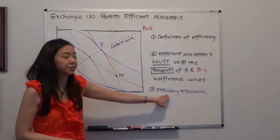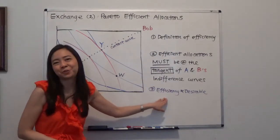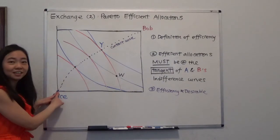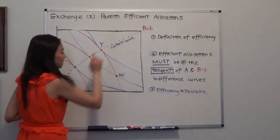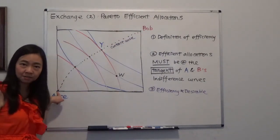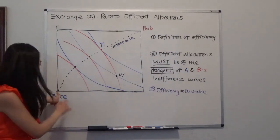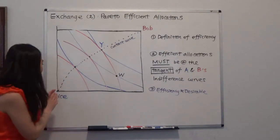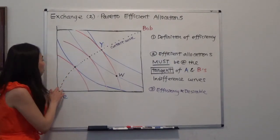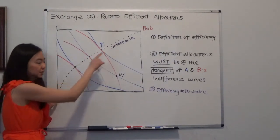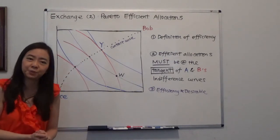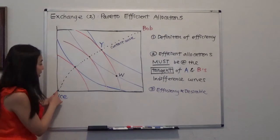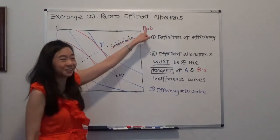Finally, efficiency doesn't mean that it's desirable. So for example, if we're at this point where Alice has nothing and Bob has everything, well, is this point efficient? Absolutely, yes, it's efficient when Alice has nothing. Why? Because in order for Alice to improve her utility, we must be hurting Bob's utility. Because Bob will have to give up a little bit of good one or a little bit of good two or both for Alice to gain some utility. And therefore, we're hurting Bob's utility.